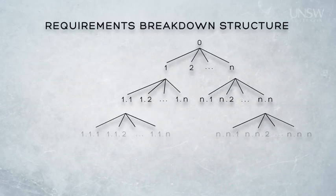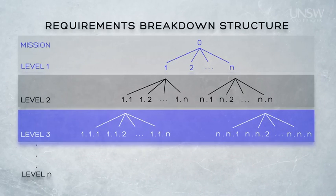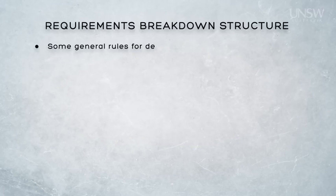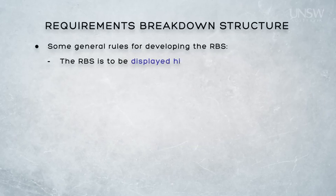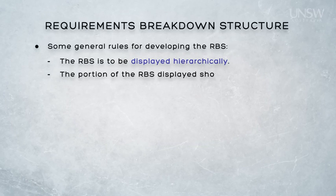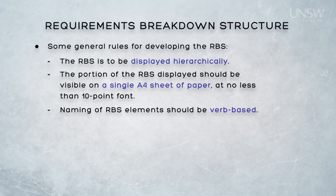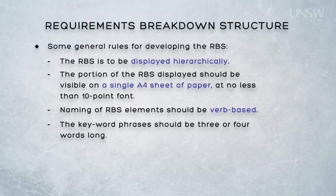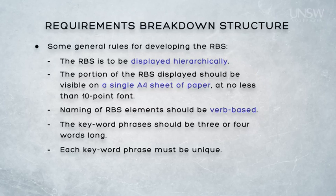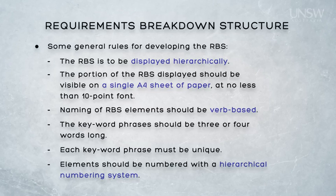Looking at this tree more formally, a numbering system allows each level to be associated with the level above and below. There are some general rules for developing the RBS: it is a hierarchical graph, and each level displayed should be visible on a single A4 sheet at no less than ten-point font. Naming of elements should be consistent with verb-based keyword phrases, normally three or four words. Each keyword phrase must be unique. Finally, elements should be numbered with a hierarchical numbering system so we can trace from parent to children and vice versa.